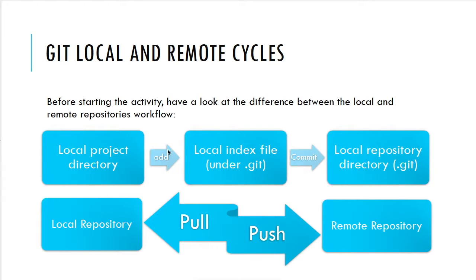Then you issue the commit command and the local repository directory will contain all the changes you have made. That is the workflow of the local repository — the cycle begins again: you add new files to the staging area, commit those changes, and so on. In the remote repository, things are a little different. The remote repository step comes after you have committed changes to the local repository; you cannot have a remote repository without a local repository first.